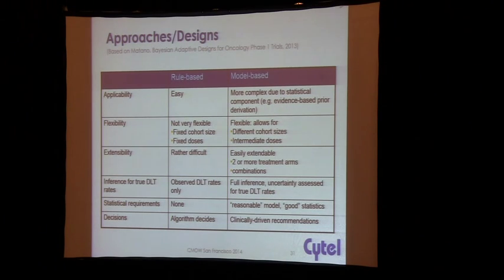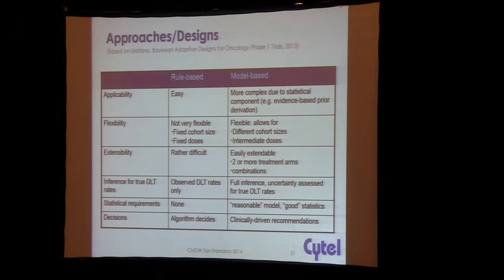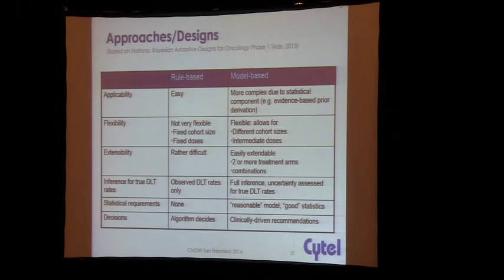There's also extensibility. For example, how do you run a combination toxicity trial if you really want to study both agents along different doses? There's no real paradigm for doing that with a rule-based method, whereas this is much more easily incorporated in a modeling framework. Because you have a model, you can do a lot more inference and probabilistic statements, giving a lot more information for people to make decisions. In rule-based methods the algorithm decides and the clinician sometimes overrules; in model-based methods, the statistics provide recommendations to the clinical team so they can make the decision to escalate or not.